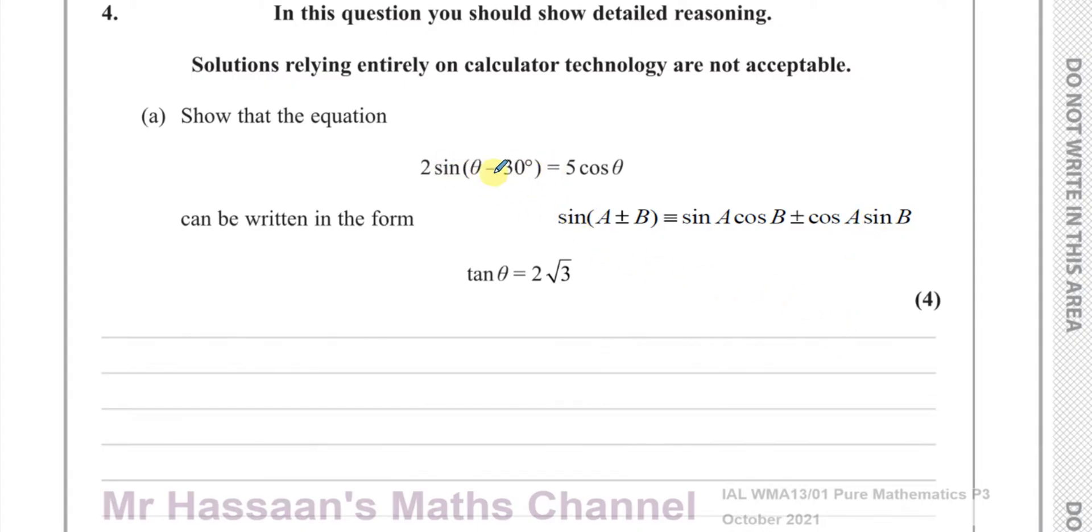If we compare it to what we got, the theta is in place of the A, the 30 degrees is in place of the B, and we have a minus between them, so we're going to use the formula with a minus here. And we'll just rewrite this. So we're going to have 2sin(θ - 30°) = 5cosθ. On this side of the equation, we're going to write 2 times sine of theta times cosine of 30 minus the cosine of theta times the sine of 30, and that's equal to 5cosθ.